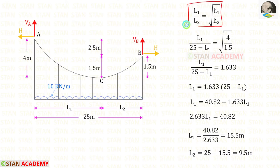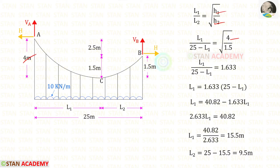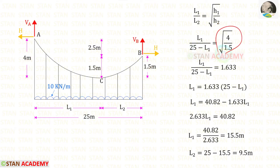Using the standard expression, we can find L1 and L2. We know that h1 is 4 and h2 is 1.5. Also we know that L2 is 25 minus L1. When we calculate this, we will get 1.633.